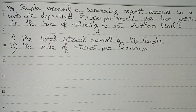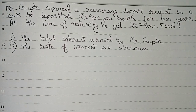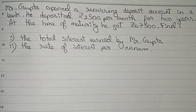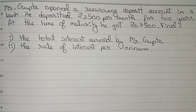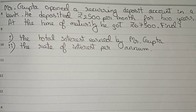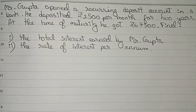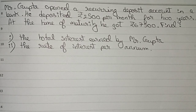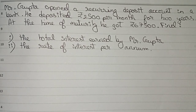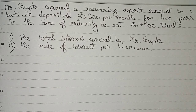Hello guys, welcome to this video. In this video, our question is: Mr. Gupta opened a recurring deposit account in a bank. He deposited rupees 2500 per month for two years. At the time of maturity, he got rupees 67,500. Find the total interest earned by Mr. Gupta and the rate of interest per annum.